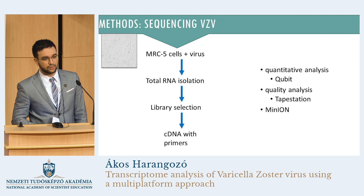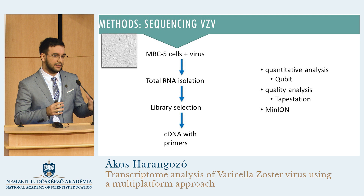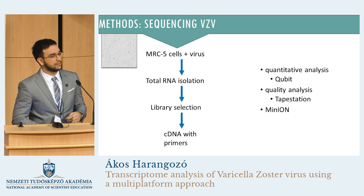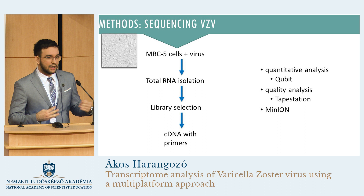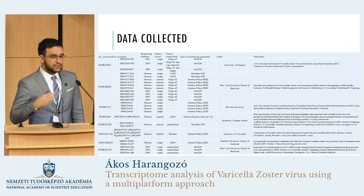This is a simplified workflow of our laboratory procedures. First, we have to infect our cells with the virus. Then we isolate the total RNA from everything else. This RNA consists of both the virus's and the infected cells' RNA. Then we execute some kind of library selection, turn our RNA into cDNA by reverse transcriptase, and with the help of PCR, we amplify it. Then we do the final sequencing with our MinION device.